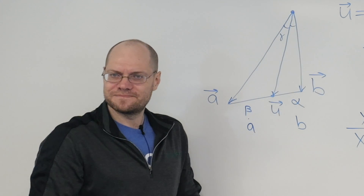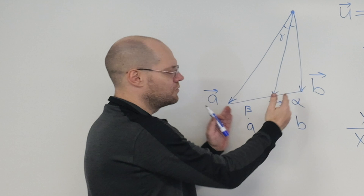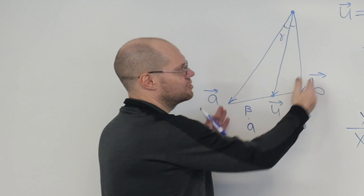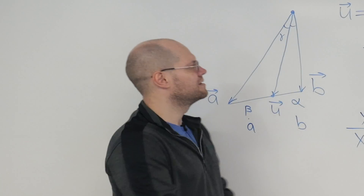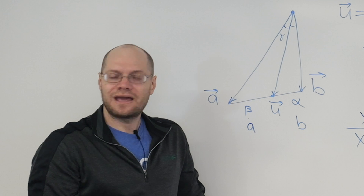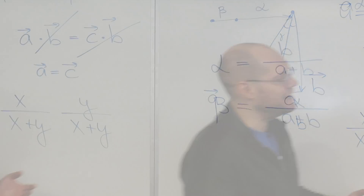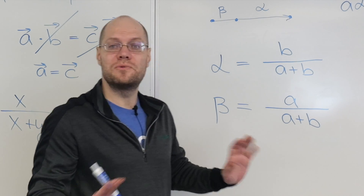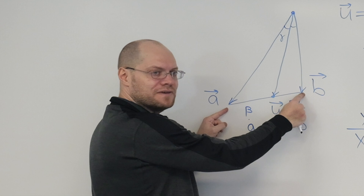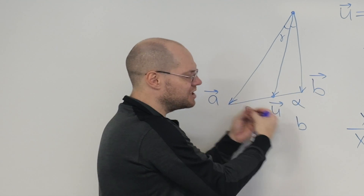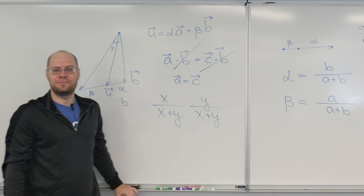The takeaway is this: we set up the problem by expressing vector u in terms of a and b, acknowledged it lies on the line, then restated the equal-angle condition using dot products. Our algebraic intuition completely took over. But by the time we got the final answer, we were never at risk of losing the geometric interpretation — we've never lost touch with the geometric nature of the problem, even though most of the solution was spent doing algebraic manipulations. Pretty cool.